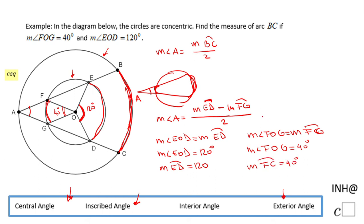So now we can go back here and replace the two measures of the two arcs. The measure of arc ED is 120, the measure of arc FG is 40. So we have 120 minus 40, that will be—80, I'm sorry—divided by 2.